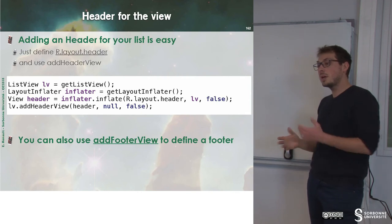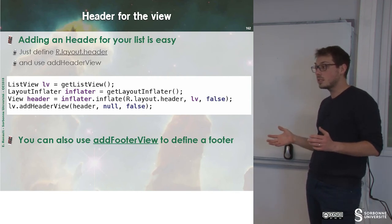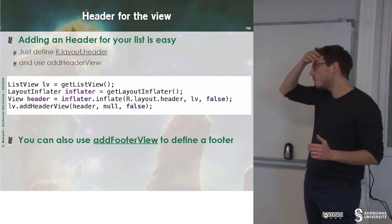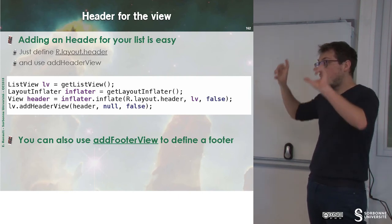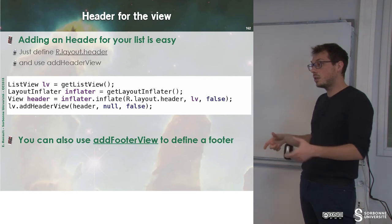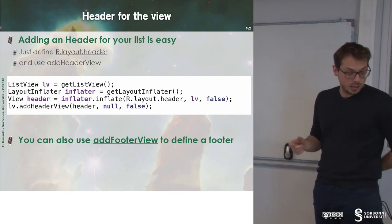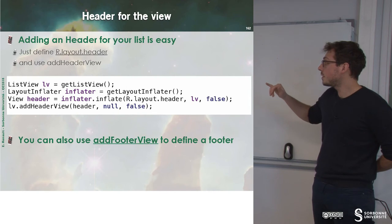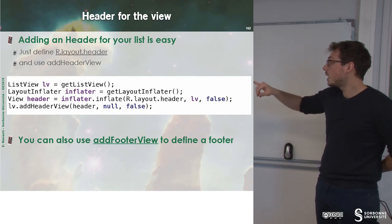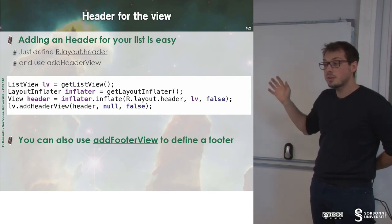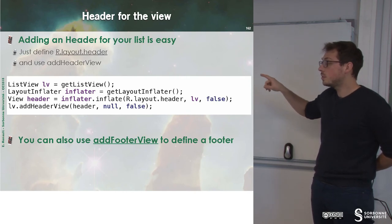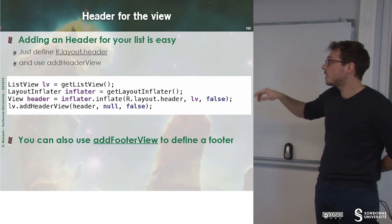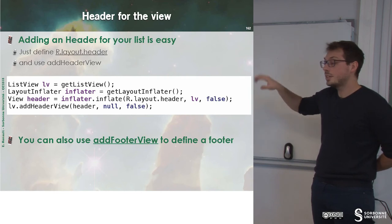When we have a list, we may also want to display a particular view at the header or footer. To do that, we grab the layout inflater, inflate our view — for example from R.layout.header — and then call addHeaderView to add it to our list.